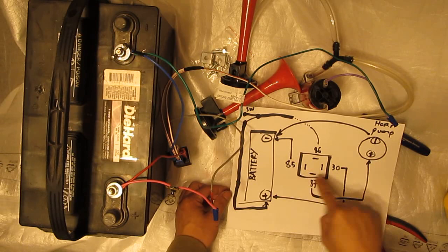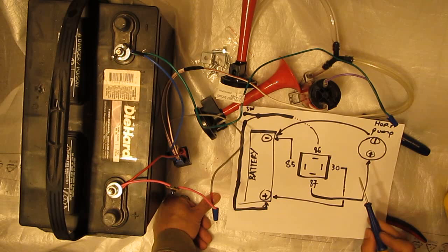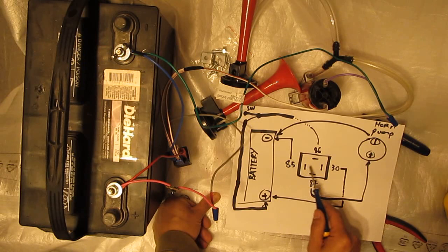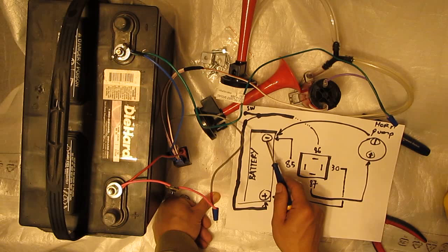And let me see if we see everything here. So this is a relay in the middle right here. And we got first, we got pin 30. Pin 30 goes to positive of the battery, to the positive of the battery. Pin 85 goes to negative of the battery or to chassis of the car.